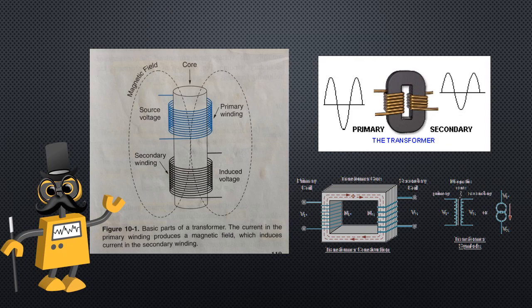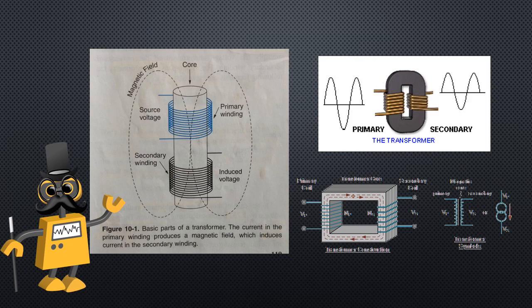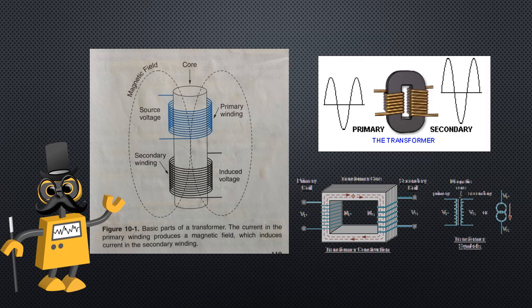For economic reasons, power is transmitted from the utility generating station to the consumer at high voltages and low currents. This permits the use of smaller wire sizes. A transformer is a device that converts electrical power from one voltage and current to another voltage and current.